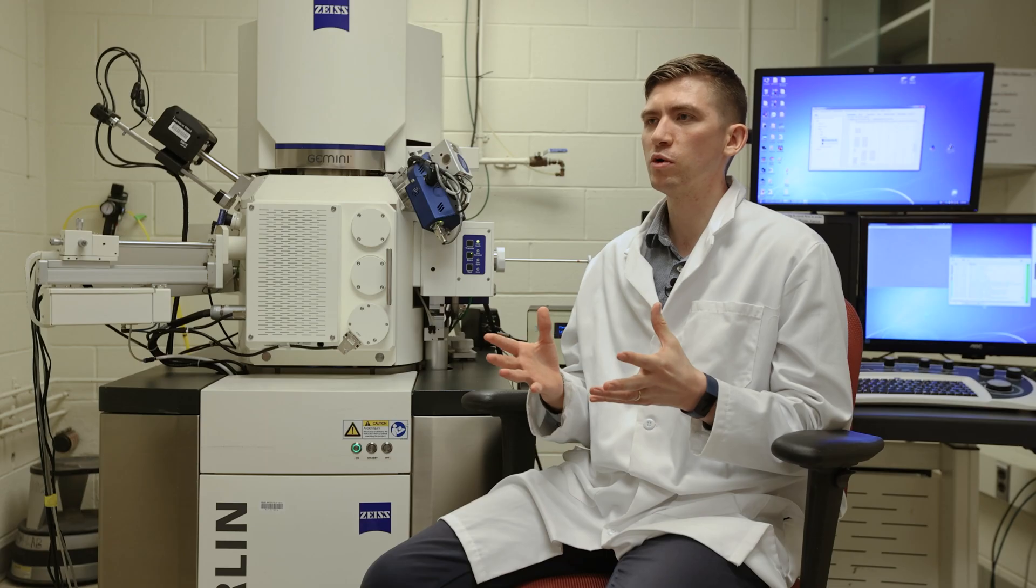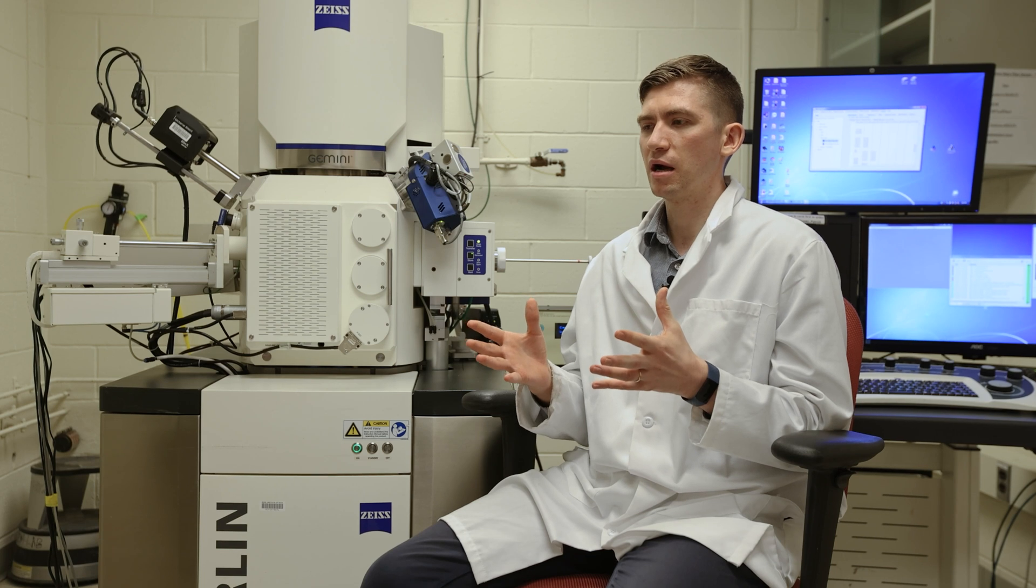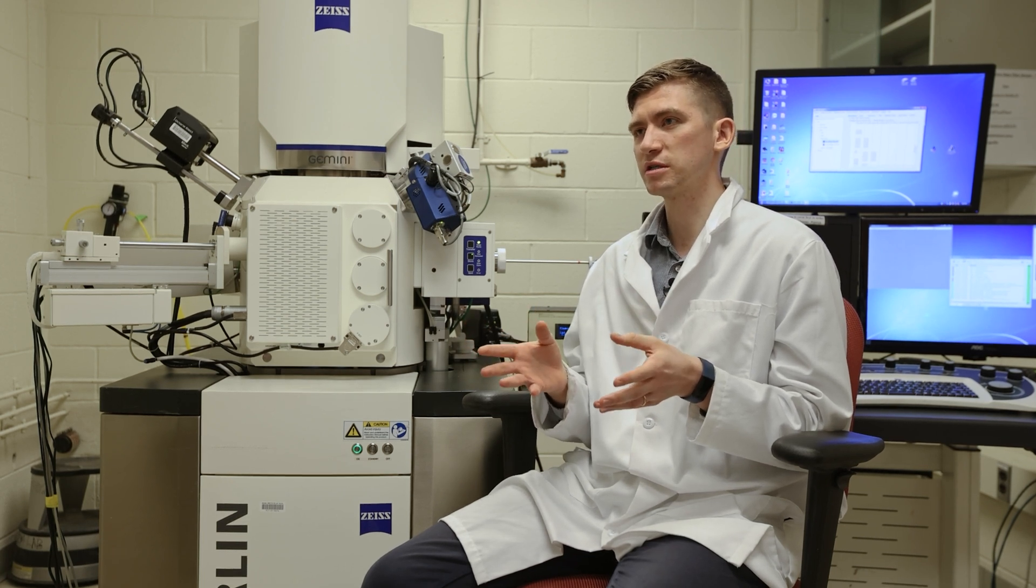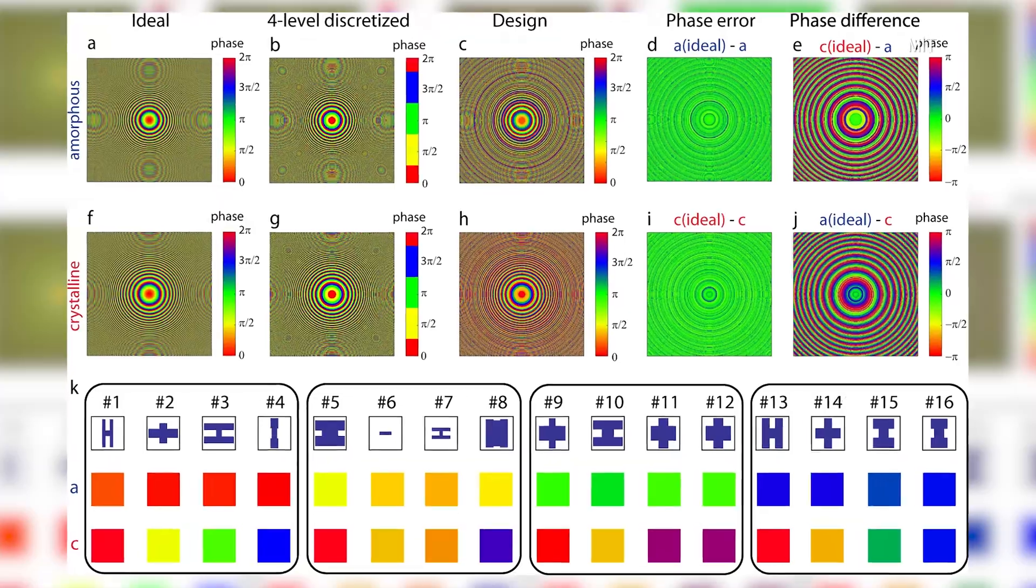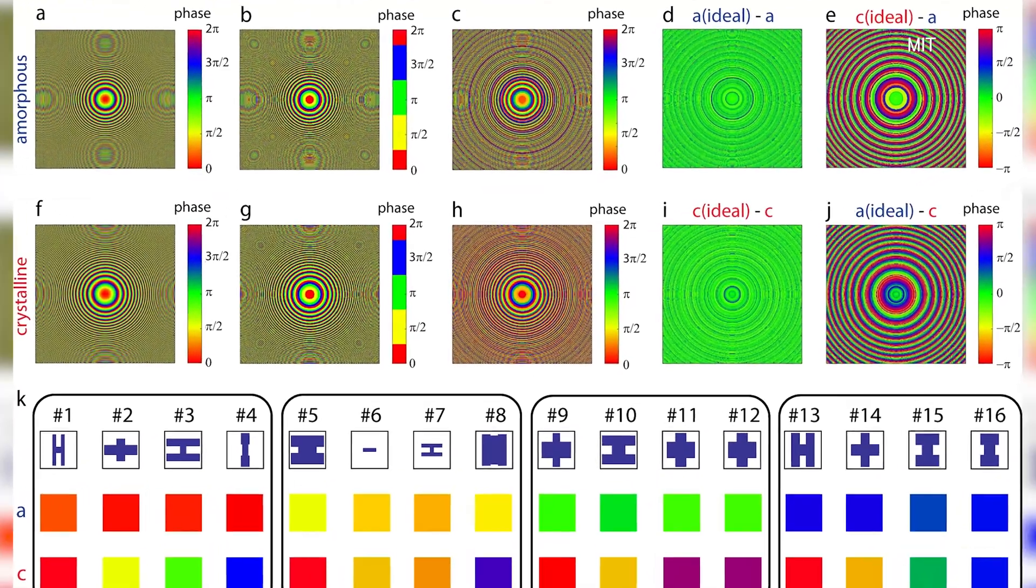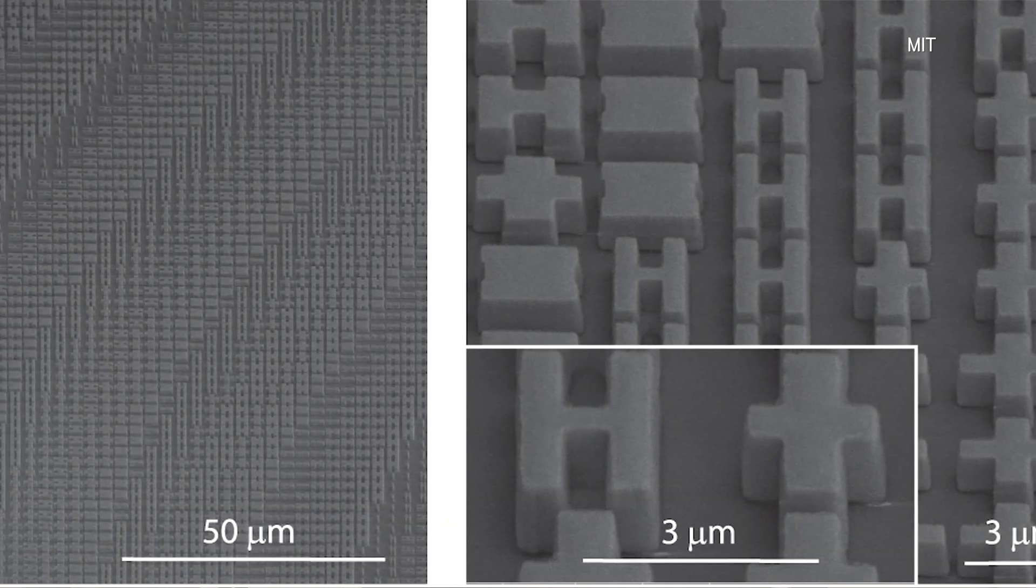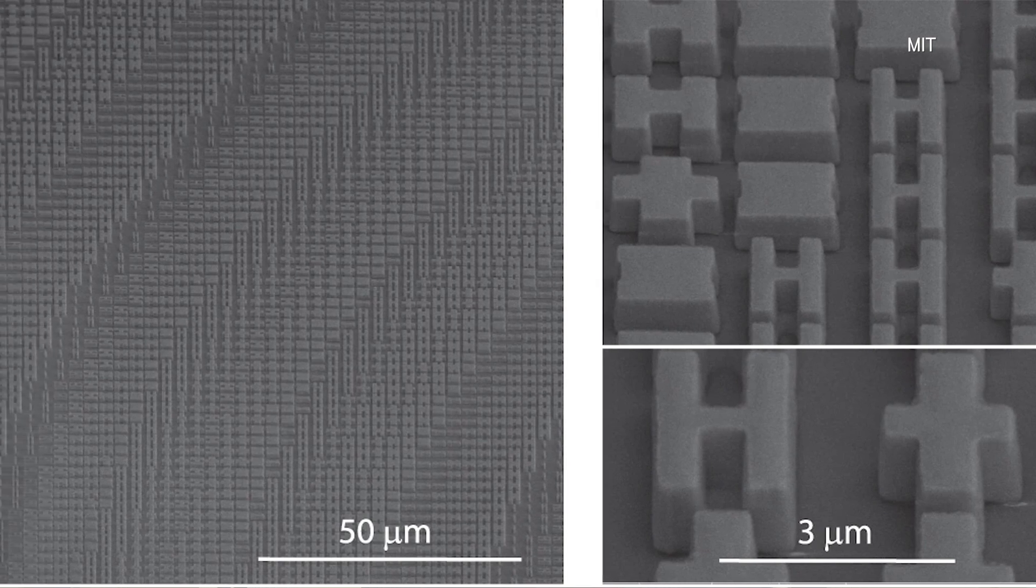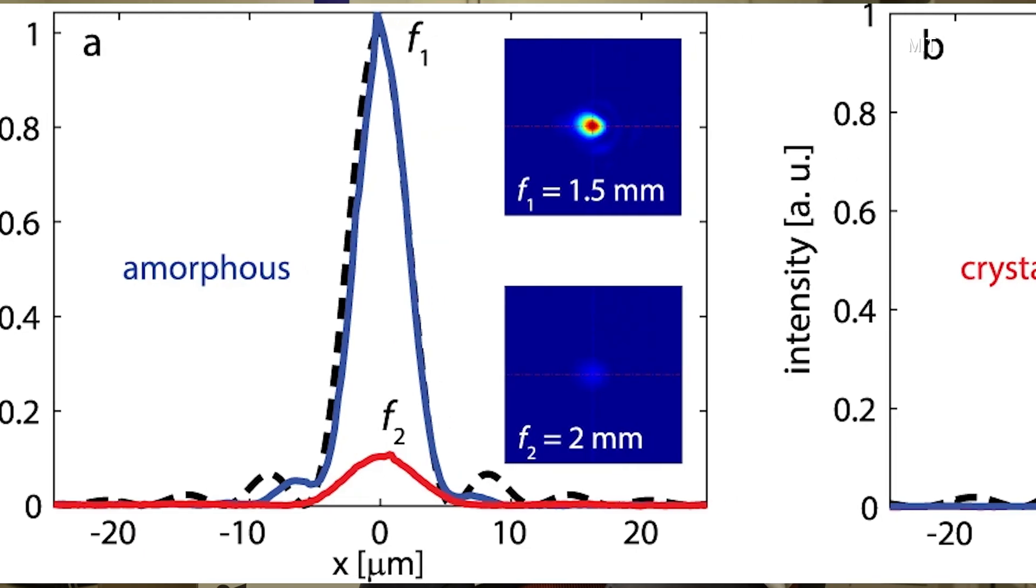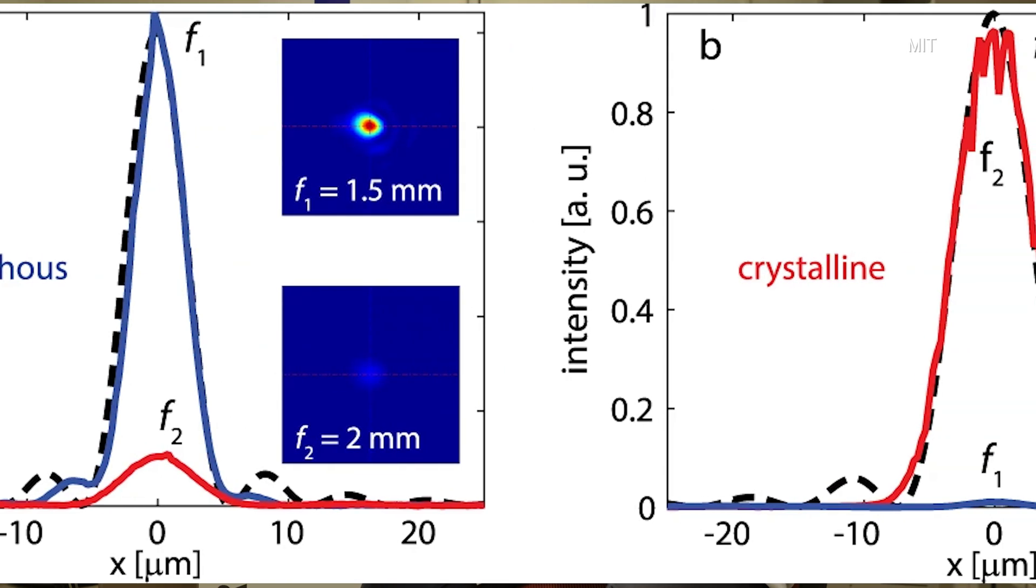Recently in our group, we found a new material type which is called chalcogenide glasses or phase change materials. One of them from the family is the well-known GST material, which is used in Blu-rays, CDs, and DVDs.